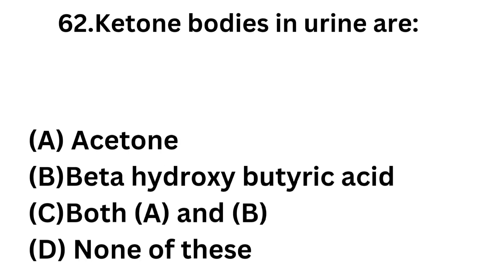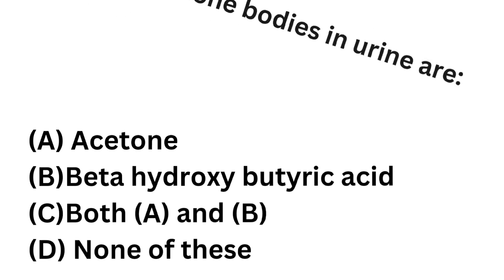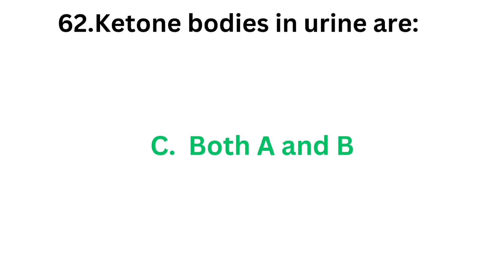Question number 62: Ketone bodies in urine are — Option A: Acetone. Option B: Beta-hydroxybutyric acid. Option C: Both A and B. Option D: None of these. Ketone bodies are acetone, acetoacetic acid, and beta-hydroxybutyric acid. So the correct answer is option C, both A and B — acetone and beta-hydroxybutyric acid.